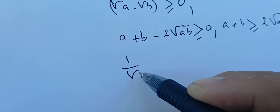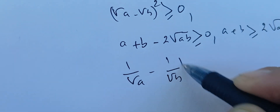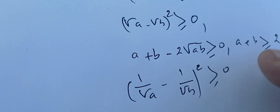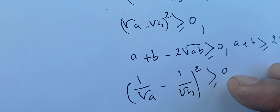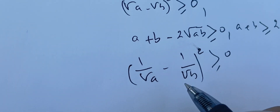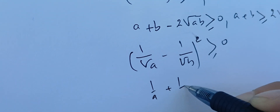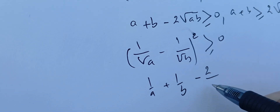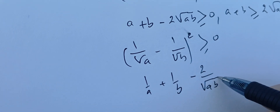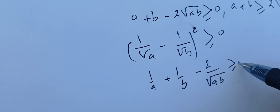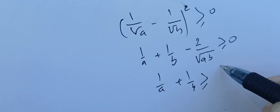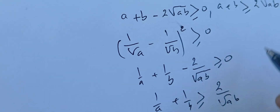Similarly, we can use (1/√a - 1/√b)² ≥ 0. Here a and b are strictly positive so the difference is non-negative. Expanding, we get one over a plus one over b minus two over the square root of ab is greater than or equal to zero. This gives us that 1/a + 1/b is greater than or equal to 2 over the square root of ab.